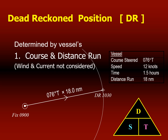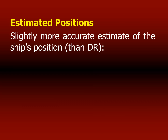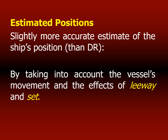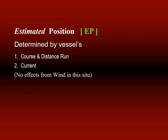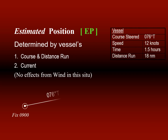The next term is estimated position. Note that in many books, dead reckoning position is also called estimated position, but this is not quite right — an estimated position is slightly more accurate because it takes into account the vessel's movement and the effects of leeway and set of the current. Estimated position, or EP, is determined by vessel's course and distance run including the effect of current. Using the same example — fixed position at 09:00, speed 12 knots, time 1.5 hours — distance run is 18 nautical miles, course 076°.